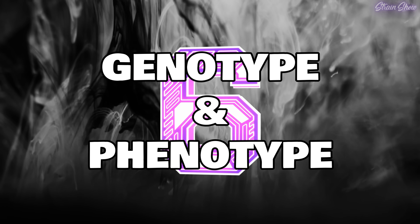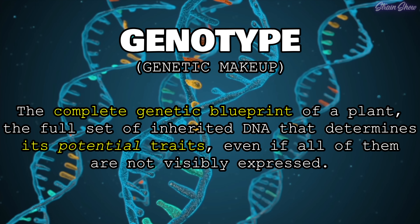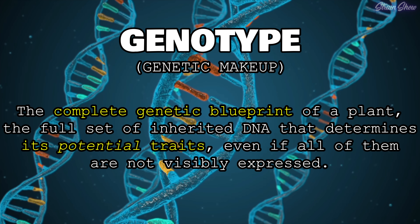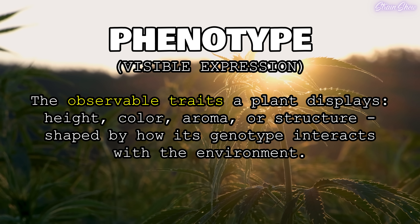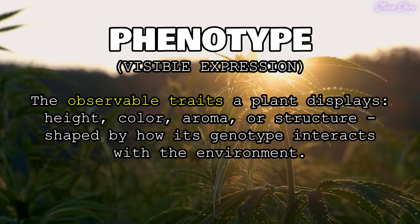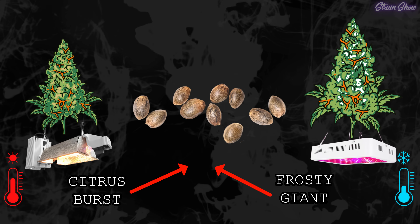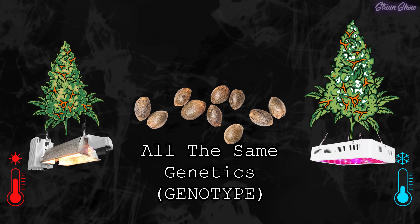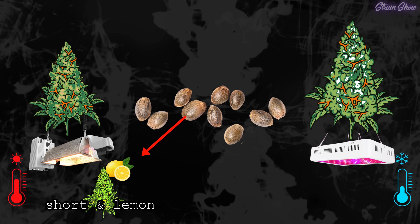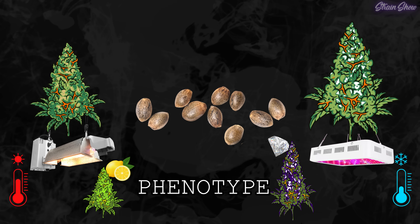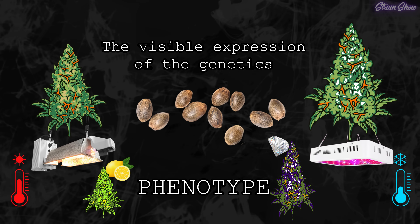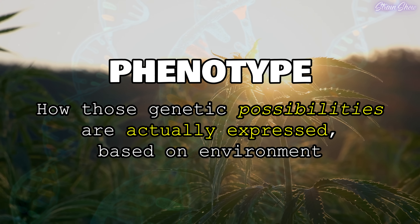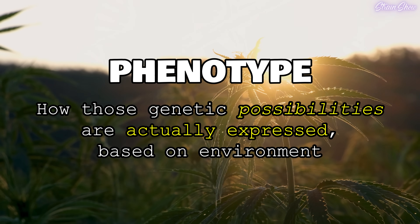Now we have genotype and phenotype — simple, but it can still trip some people up. The genotype is the plant's complete genetic recipe, the full DNA it inherits from both parents. The phenotype is just how that genetic recipe actually shows up in real life. If we germinated 10 seeds from citrus burst crossed with frosty giant, they all share the same genotype, but one might be short with lemon-smelling buds and another might be tall with heavy resin — that's the phenotype, the visible expression of those genes depending on their specific environment, light, and nutrients.